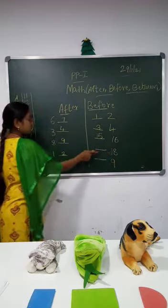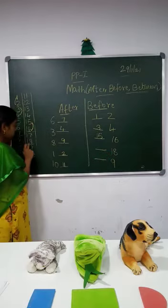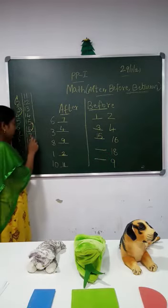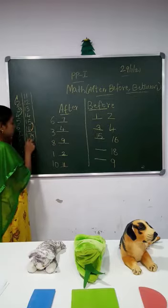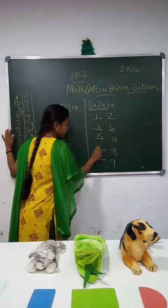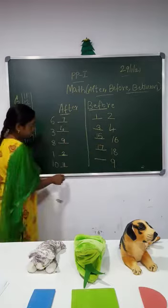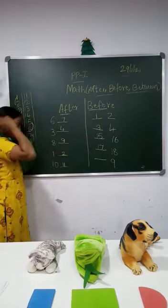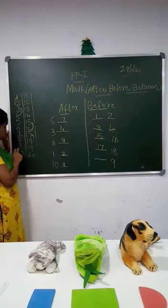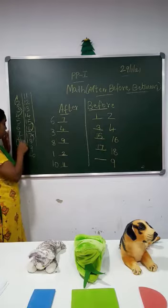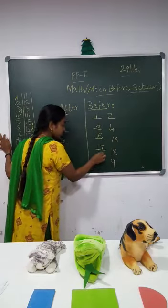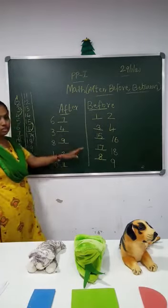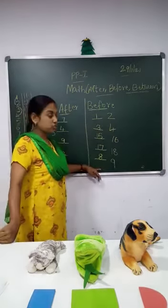Next is dash eighteen. Before eighteen, what you will get? Number seventeen — so you write here number seventeen. And here is nine — before nine, what number you will get? Before nine is eight. So this is the number which comes before.